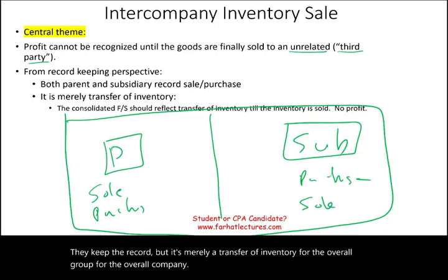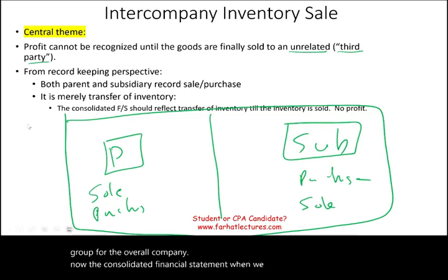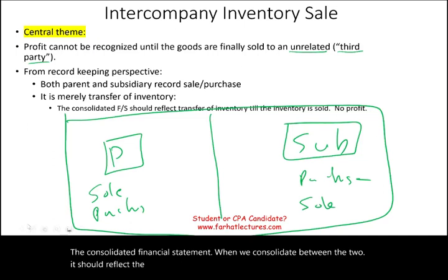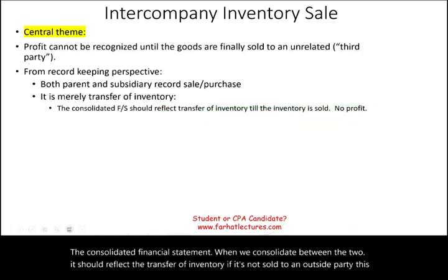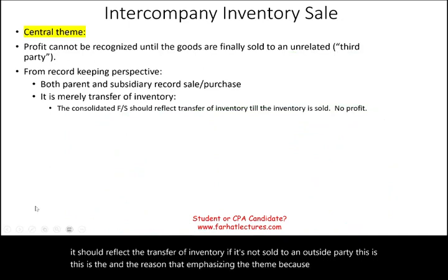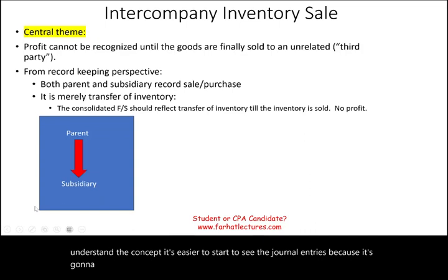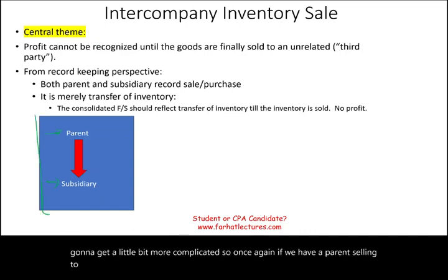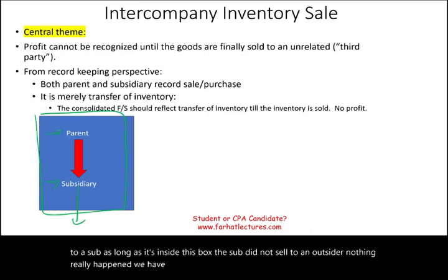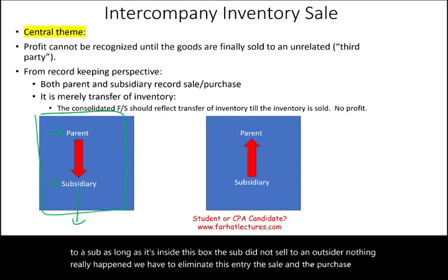The consolidated financial statement, when we consolidate between the two, should reflect the transfer of inventory if it's not sold to an outside party. If we have a parent selling to a sub, as long as it's inside this box — the sub did not sell to an outsider — nothing really happened. We have to eliminate the sale and the purchase, because it's merely a transfer of inventory.